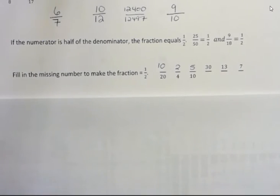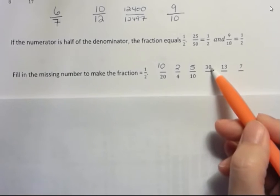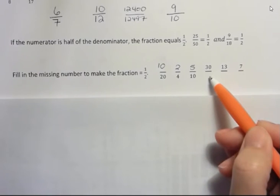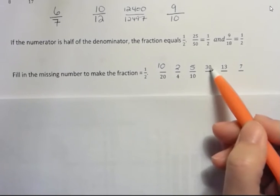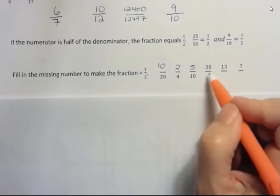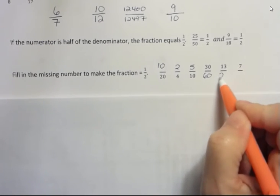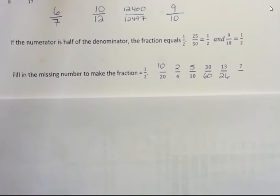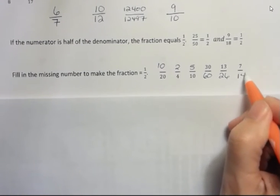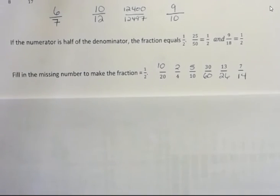Now these last three I'm given the numerator and I have to figure out the denominator. Remember the numerator should be half of the denominator. So I would want to multiply 30 by 2 and get 60 to make that 1 half. 30 is half of 60. 13 times 2 would be 26. And 7 times 2 would be 14. So all of those fractions equal 1 half.